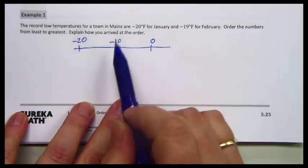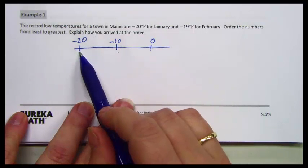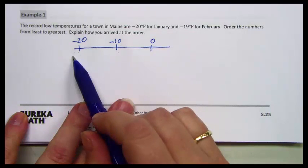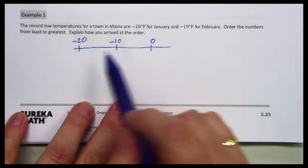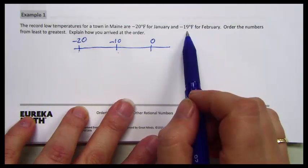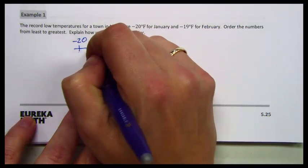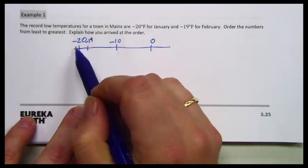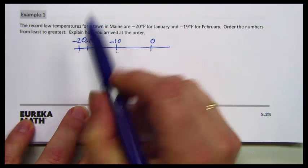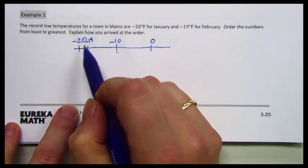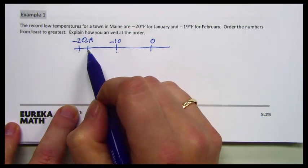Zero is larger than both negative 10 and negative 20 because it is to the right of both numbers. If we were to put negative 19 on this number line, it would be between negative 20 and negative 10, but it is to the right of negative 20, so it is the larger number.